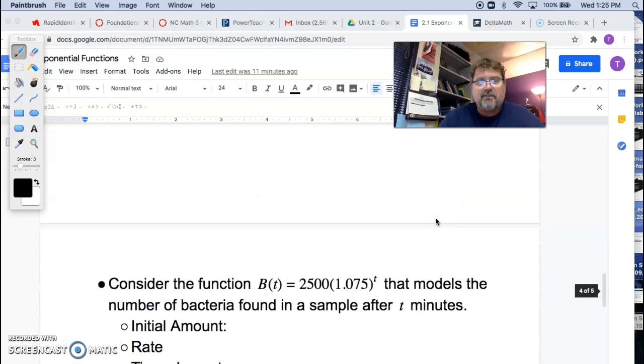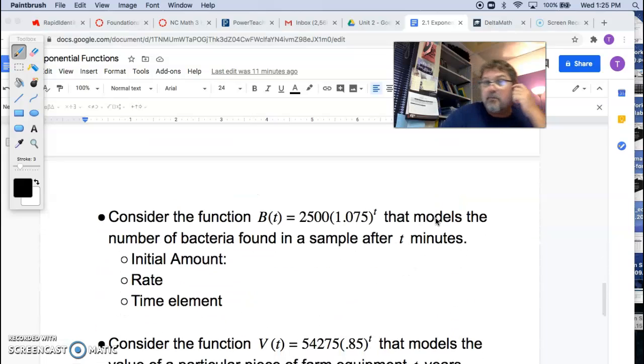Let's look at a couple of examples to wrap this video up, and I'm going to do, well, these are kind of like examples. They're just considerations. We'll do a real example in another video. It says, consider the function b(t) = 2500(1.075)^t that models the number of bacteria found in a sample after t minutes.